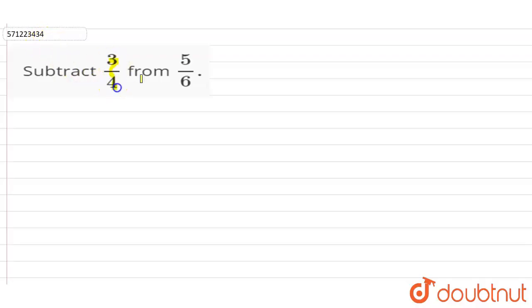3 by 4 from 5 by 6. So we have to subtract 3 by 4 from 5 by 6. So 5 by 6 minus 3 by 4. Now if you can see in this question, the denominator of both the terms are different.